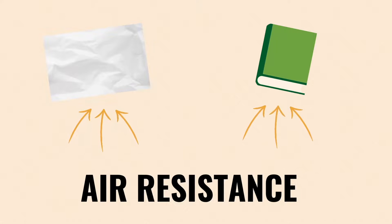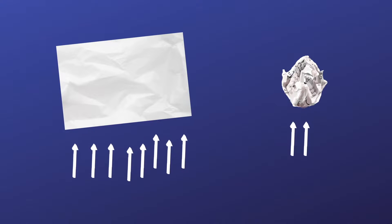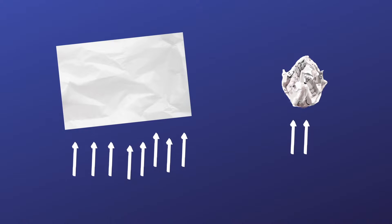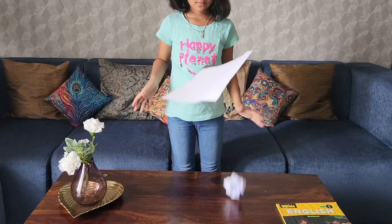This is happening because of air resistance, which is a force caused by the air opposing the movement of objects. Air resistance is a force that acts in the opposite direction of moving objects, or in the opposite direction of gravity — it resists or slows things that are moving. So the air resistance on the crumpled paper was less compared to the plain paper, which is why the crumpled paper moved faster.